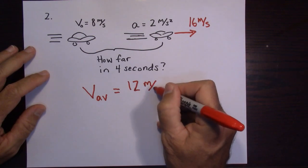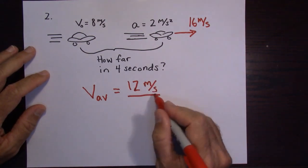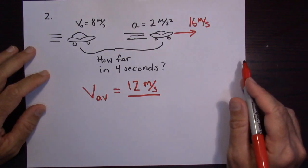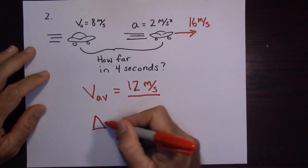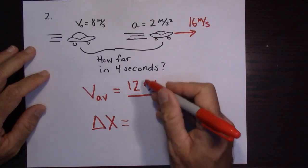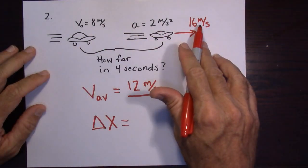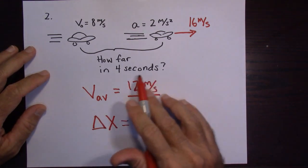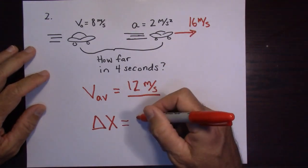That's your average speed. If you go 12 meters per second on average for 4 seconds, then the distance you would travel is 48 meters.